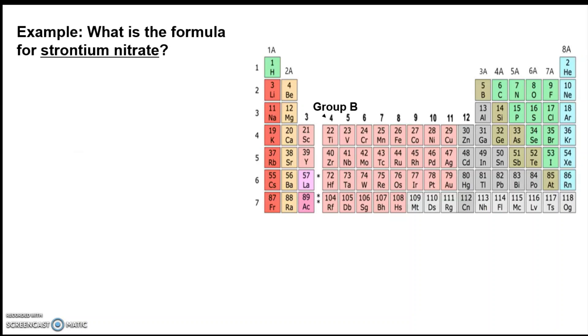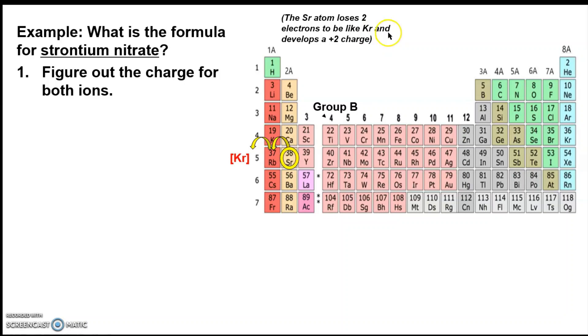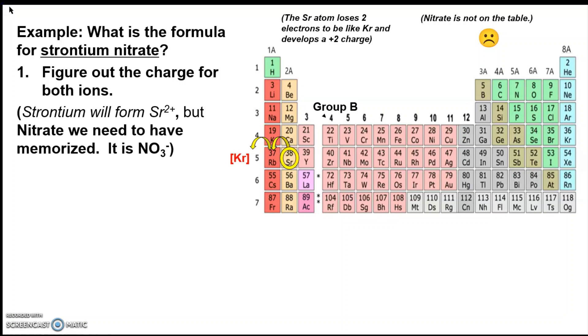So let's see if we can put that to use. Another question really quick. What is the formula for strontium nitrate? Again, we figure out the charge for both ions. Strontium is right there. We're going to lose electrons until we get to have a stable noble gas configuration like krypton. So it loses two electrons to be like krypton and develops a plus two charge. And here's the point where someone might try to look over here at the nitrogen for the nitrate. But remember that the nonmetals over here only form ions that end in I, I-D-E. This is nitrate. This is one of the ones that we have to have memorized.